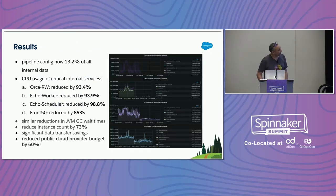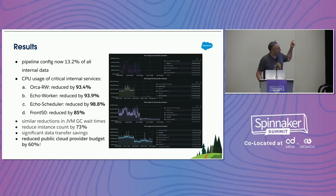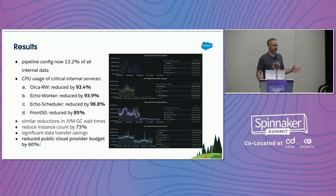These graphs have two different x-axes because we rolled out changes in two phases — the Orca changes first and then the Front50 changes. Skipping to the bottom line: we got a 60% reduction in our bill. That's a big deal — Salesforce spends a lot of money on Spinnaker.